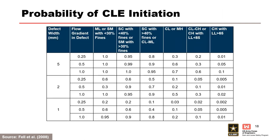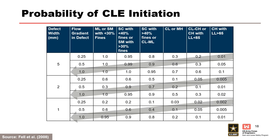This table further illustrates the influence of the likelihood of initiation of concentrated leak erosion as a function of soil type, crack width, and hydraulic gradient in the crack. It shows the probability of initiation in 1 millimeter, 2 millimeter, and 5 millimeter wide cracks for different soil types. Dispersive soils have similar probabilities of initiation as ML and SM soils. Erodibility increases from upper right to lower left in the table. For each crack width, likelihood increases from top to bottom with increasing hydraulic gradient.